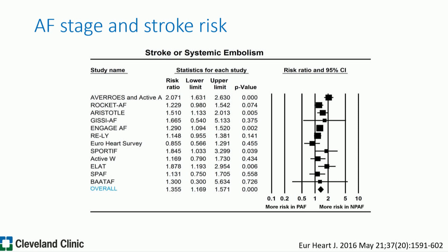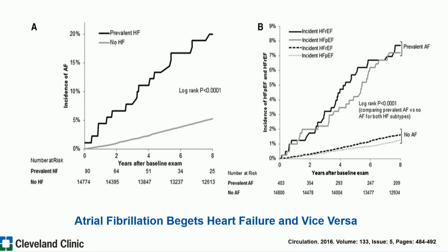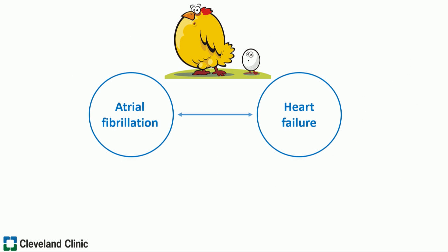Looking at more advanced AFib and stroke risk: the more advanced you are on that disease continuum, the more likely you are to experience a stroke related to AFib. Along the same lines, we know that AFib begets heart failure and vice versa. This is to a certain degree confounded by the presence of risk factors, which highlights the importance of risk factor control, as Dr. Sanders discussed earlier.